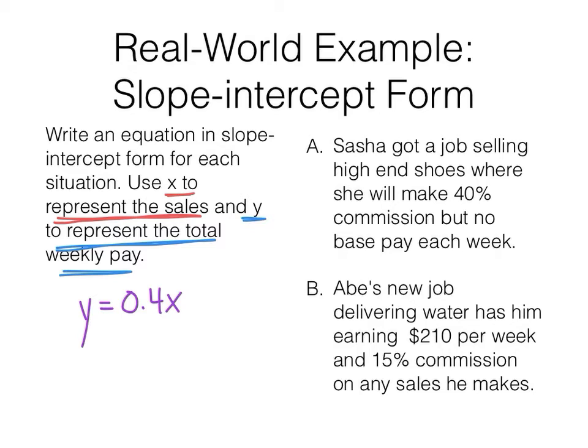If y is her weekly pay, she's making 40% of, or 0.4 times, the sales. So 40% of the sales. That's Sasha.